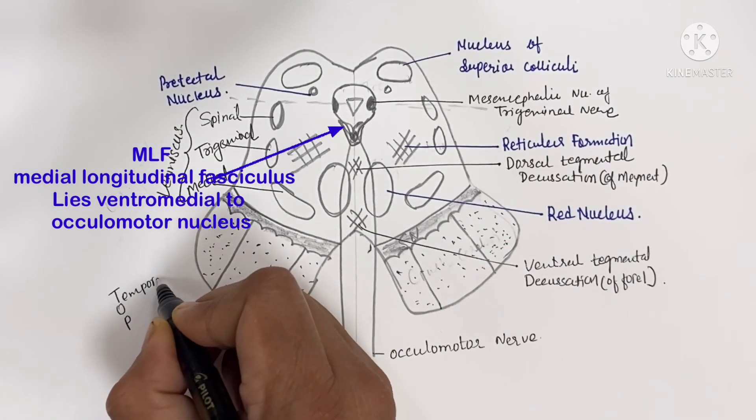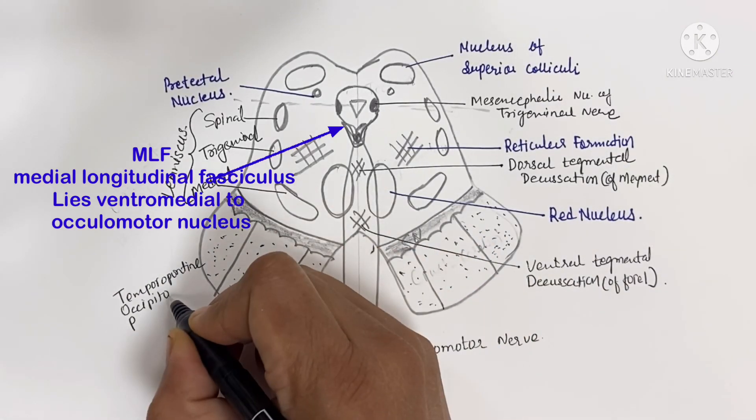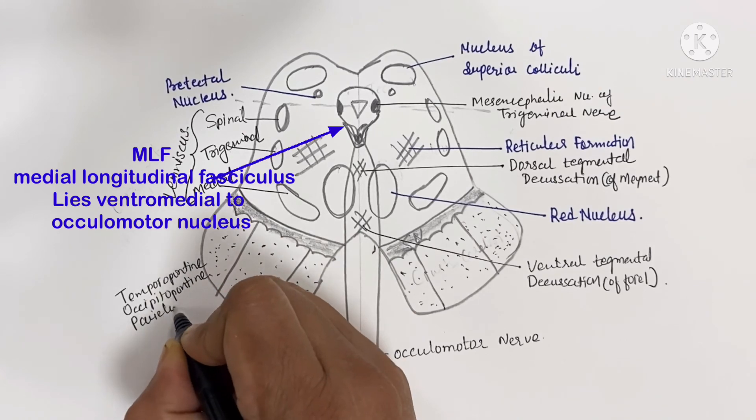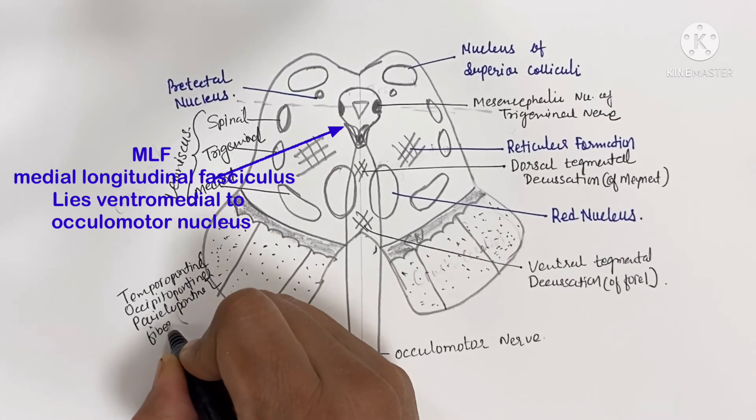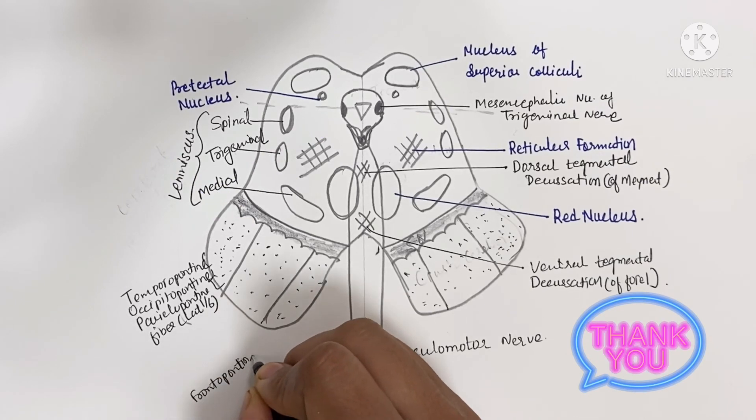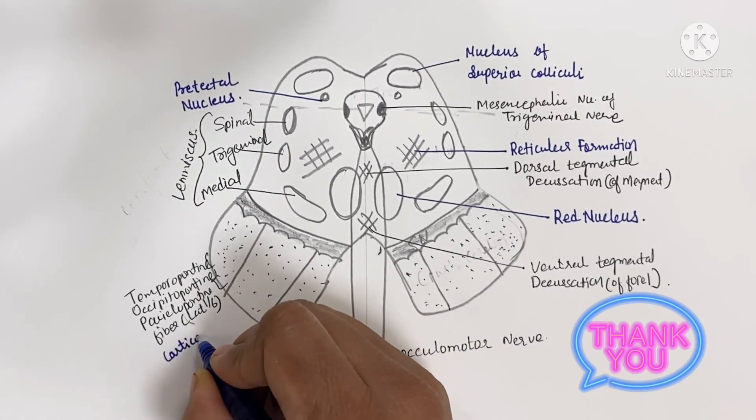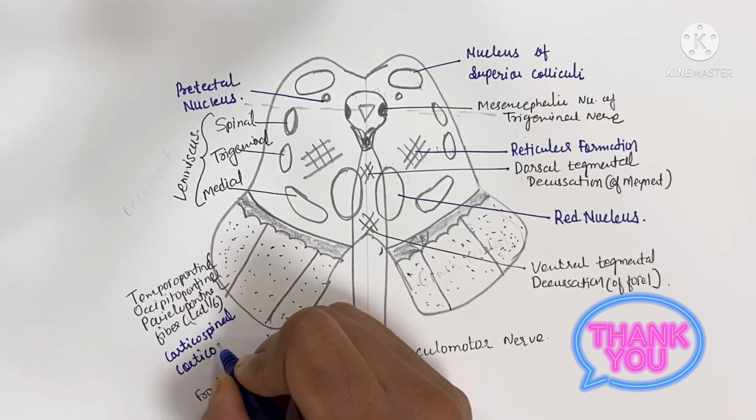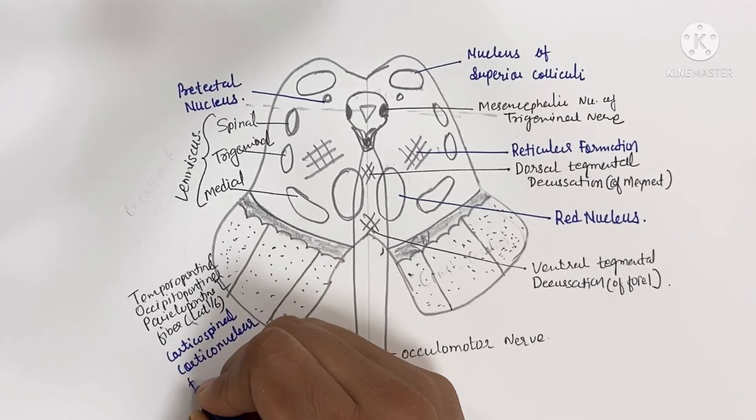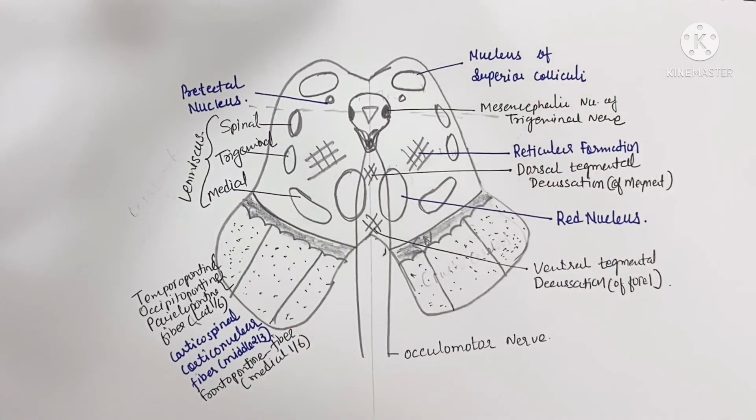Crura cerebri is part of the cerebral peduncle situated anterolateral to the substantia nigra. It contains the descending tracts which connect the cerebral cortex to the spinal cord and cranial nerve nuclei.